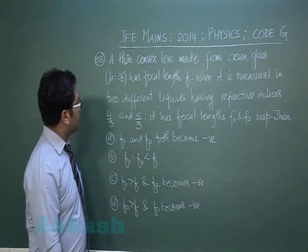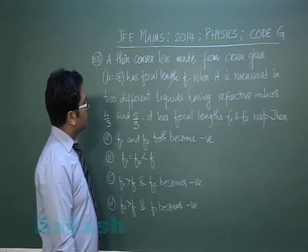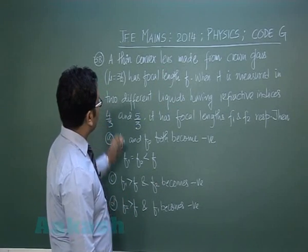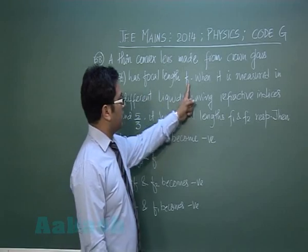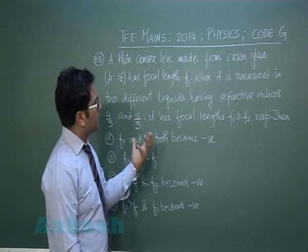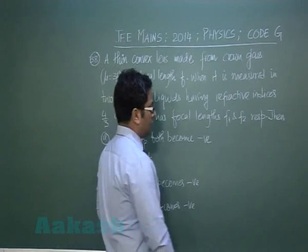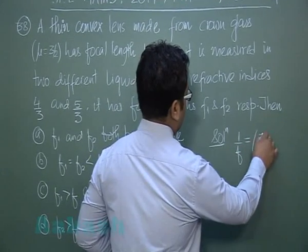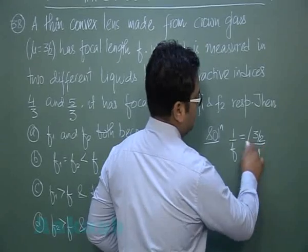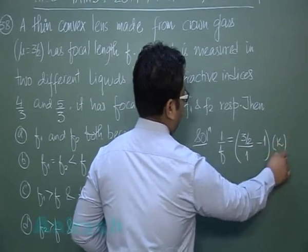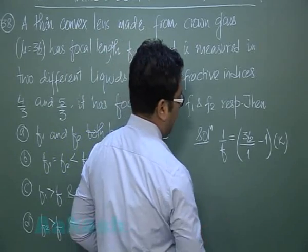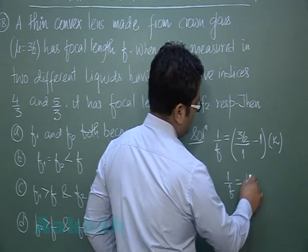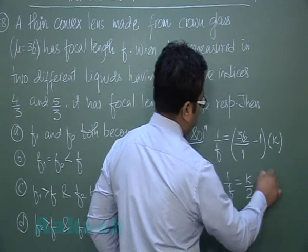Question number 38 is from ray optics related to the lens maker formula. A thin convex lens made from crown glass with a given refractive index has focal length f — assumed to be in air. Using the first data, 1/f = (μ_lens/μ_medium − 1) × (1/R₁ − 1/R₂). With μ_lens = 3/2 in air, the geometric factor k gives 1/f = k/2 as equation 1.